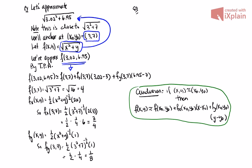So f(3.02, 6.95) ≈ 4 + (3/4)(0.02) + (1/8)(−0.05). That's our approximation. I'm not going to simplify further because it's just arithmetic from there — and it's much easier to check your answers when looking at things in this form.